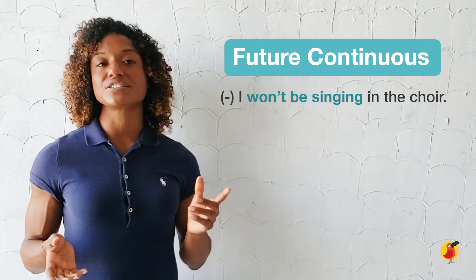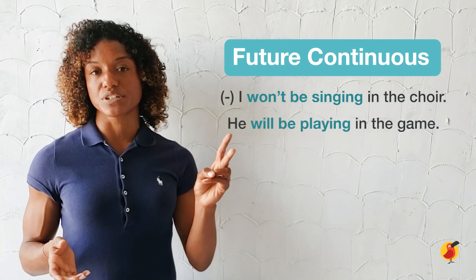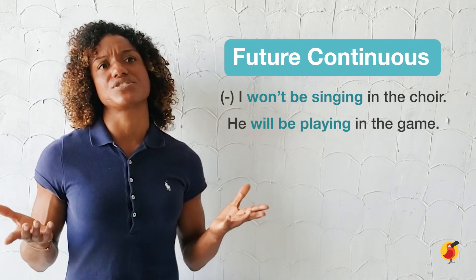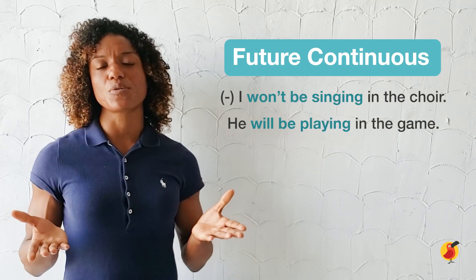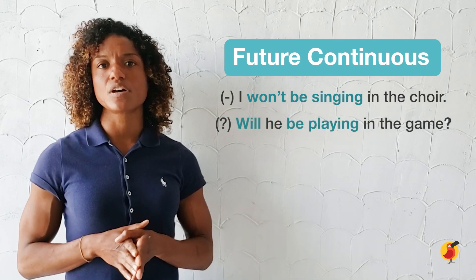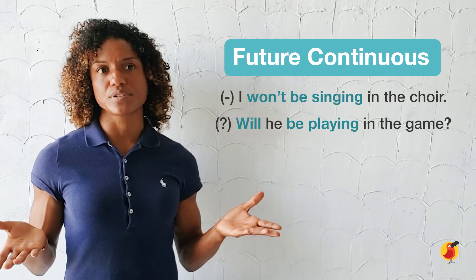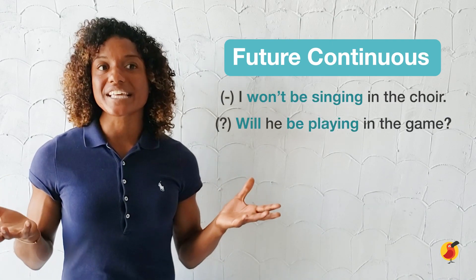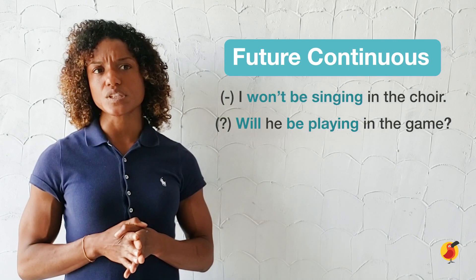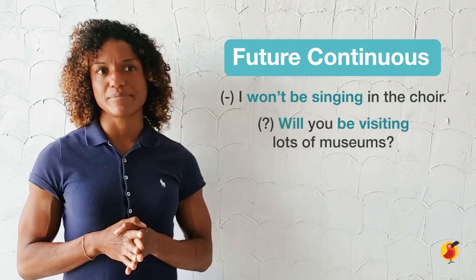To form a question, we only need to change the first and second words of a non-question sentence. So he will becomes will he. For example: Will he be playing in the game tonight? Will you be visiting lots of museums?